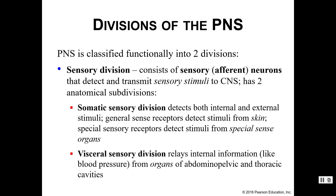We can do this in one of two ways. Your somatic sensory division detects both internal and external stimuli from things like your skin and your special senses — eyes, ears, nose, mouth, all that. Your visceral sensory division relays internal information from your internal organs of your abdominal, pelvic, and thoracic cavities. This would be information regarding things like your blood pressure and your heart rate.